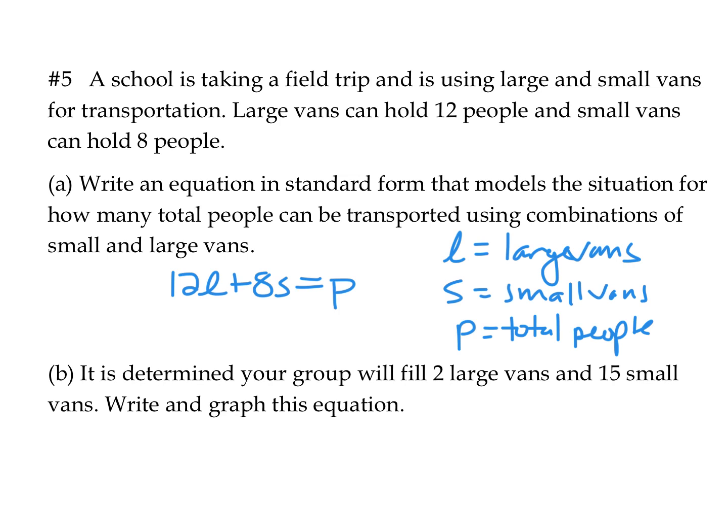We can figure out how many people we can transport based on how many large and small vans we're using. If we know we're going to use 2 large vans and 15 small vans, we calculate: 12 times 2 plus 15 times 8 equals 144. So there are 144 people going on the field trip — 2 large vans carrying 24, and 15 small vans carrying 120, for a total of 144 people.